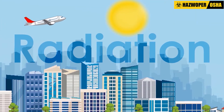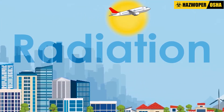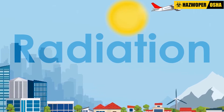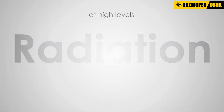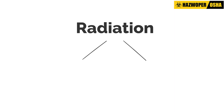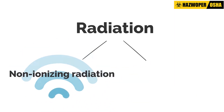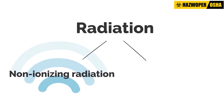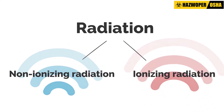While radiation has always been a part of the universe we live in, at high levels, it is hazardous. Radiation can be divided into two types: non-ionizing radiation and ionizing radiation.